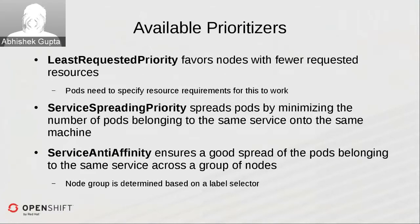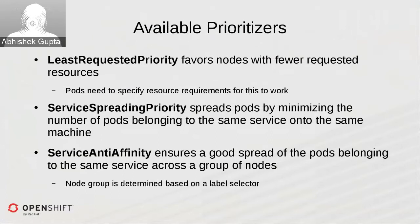Some available priority functions out of the box include least requested priority, which favors nodes where fewer resources are requested. We calculate resources already requested by pods on a given node and prioritize nodes with greater available capacity, deprioritizing those with low capacity. Pods do need to specify resource requirements for this priority function to have any meaningful impact.